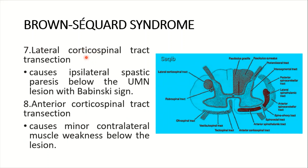Number seven: lateral corticospinal tract. This is the lateral corticospinal tract shown with the red laser. Its transection causes ipsilateral spastic paresis below the lesion — an upper motor neuron lesion — with the Babinski sign. This was described in the last lecture, and I have explained upper and lower motor neuron lesions and the Babinski sign in detail with pictures.